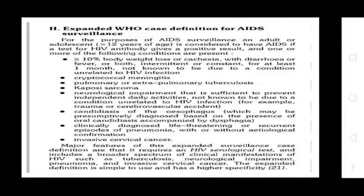Expanded WHO case definitions of AIDS include: 10% or more body weight loss or cachexia with diarrhea or fever, both intermittent or constant, for at least one month; cryptococcal meningitis; pulmonary or extrapulmonary tuberculosis; Kaposi's sarcoma; neurological impairment sufficient to prevent independent daily activities; candidiasis of the esophagus; and life-threatening or recurrent episodes of pneumonia with or without etiological confirmation. Also included is invasive cervical cancer.